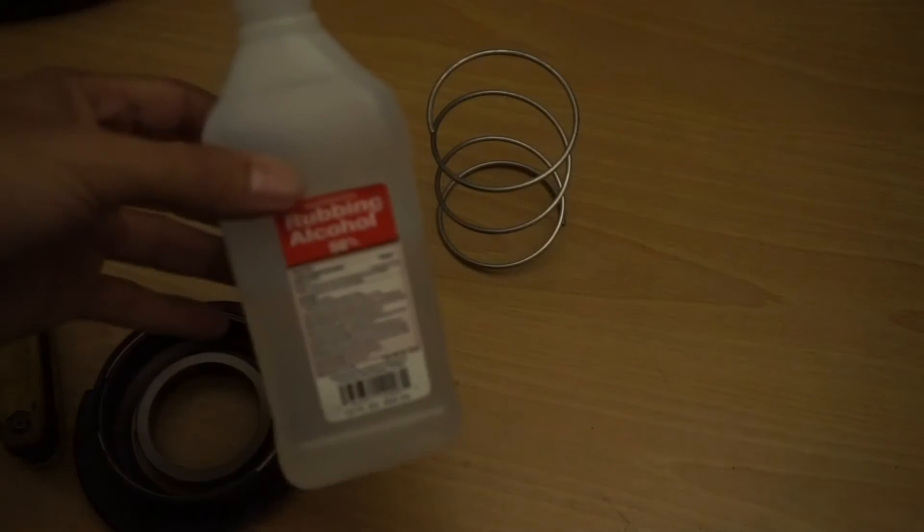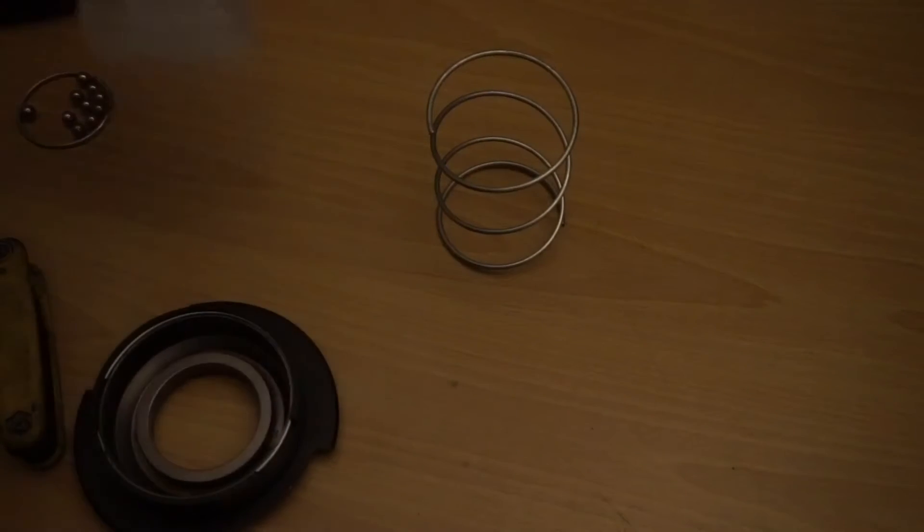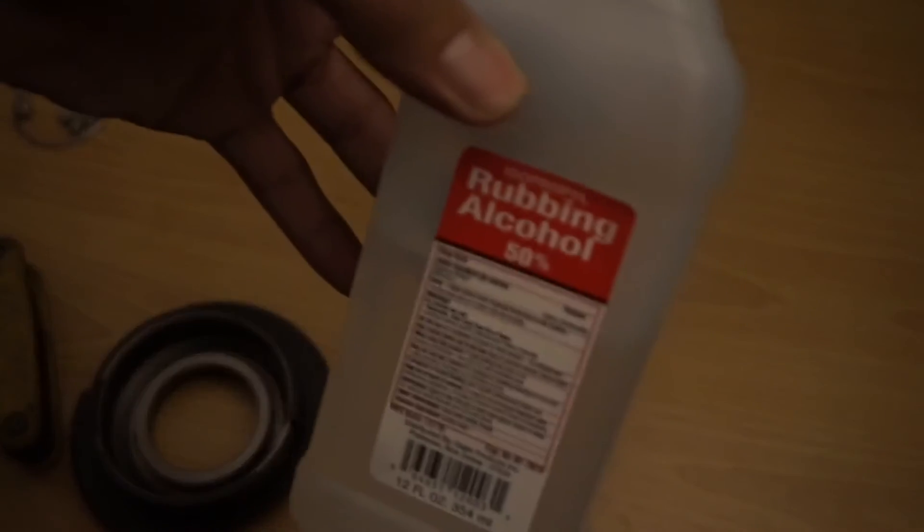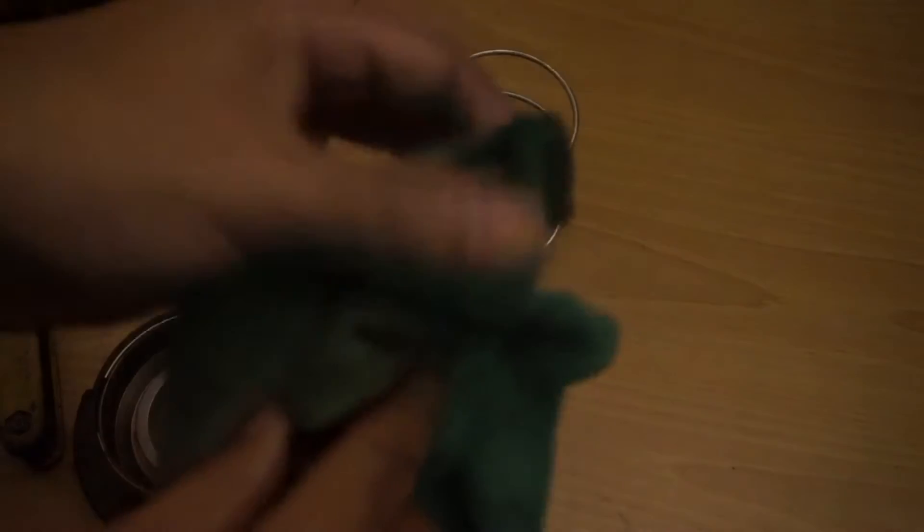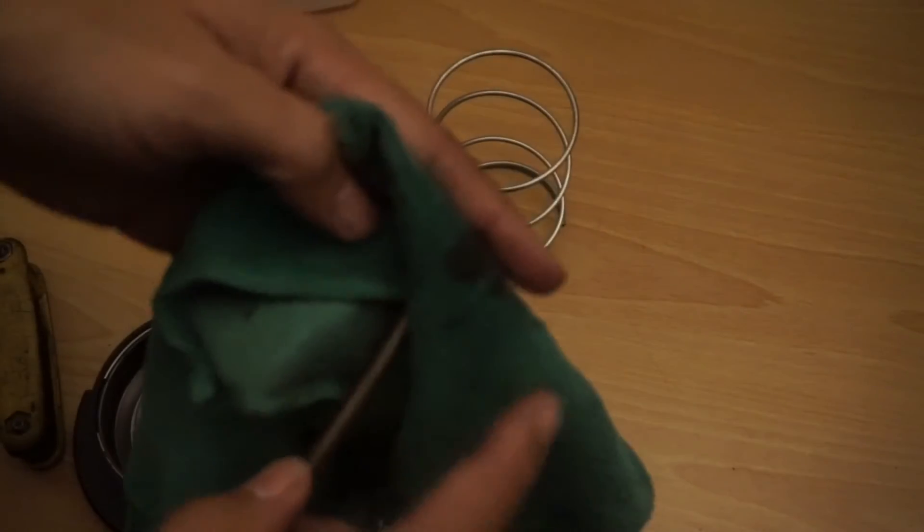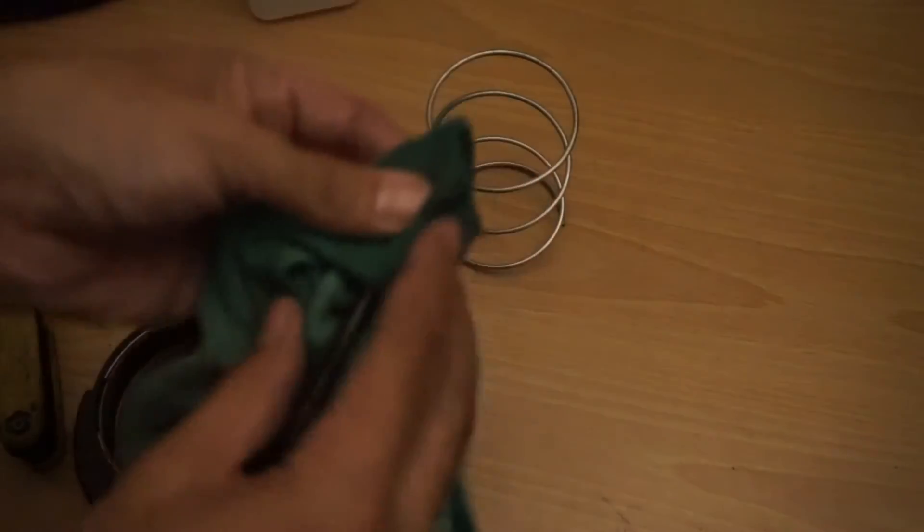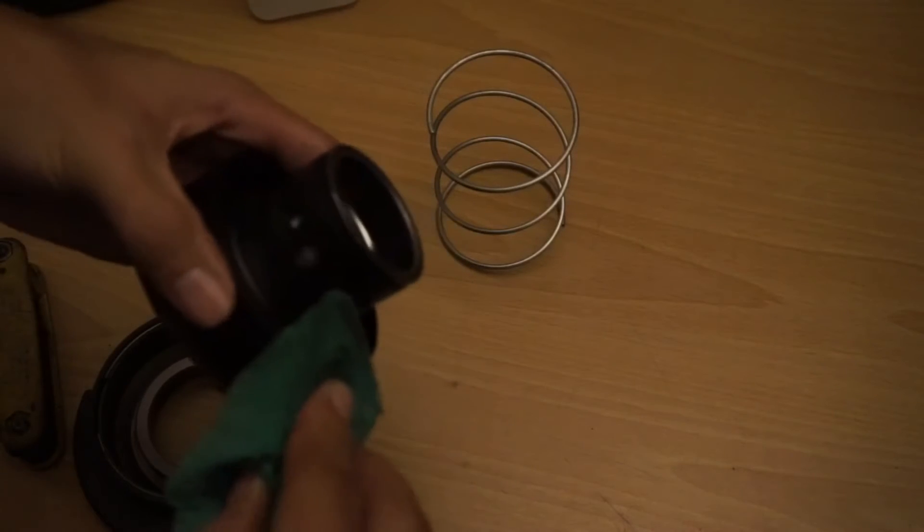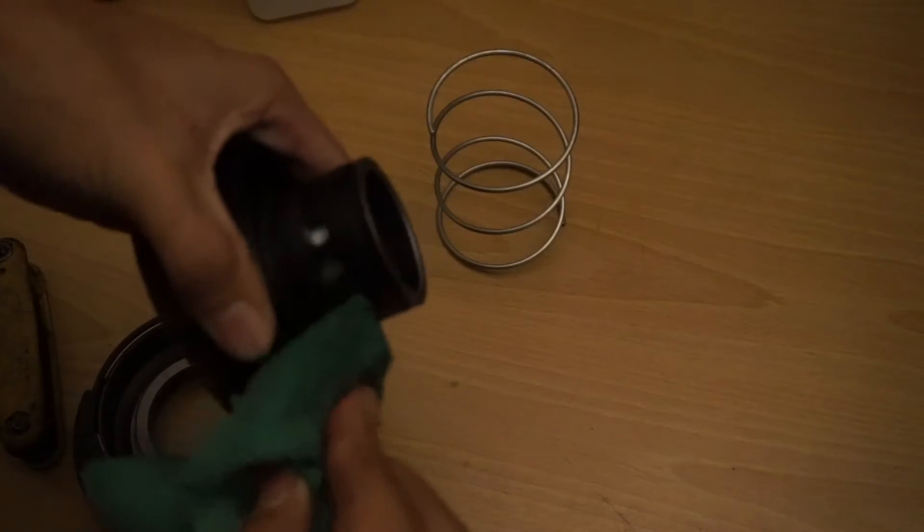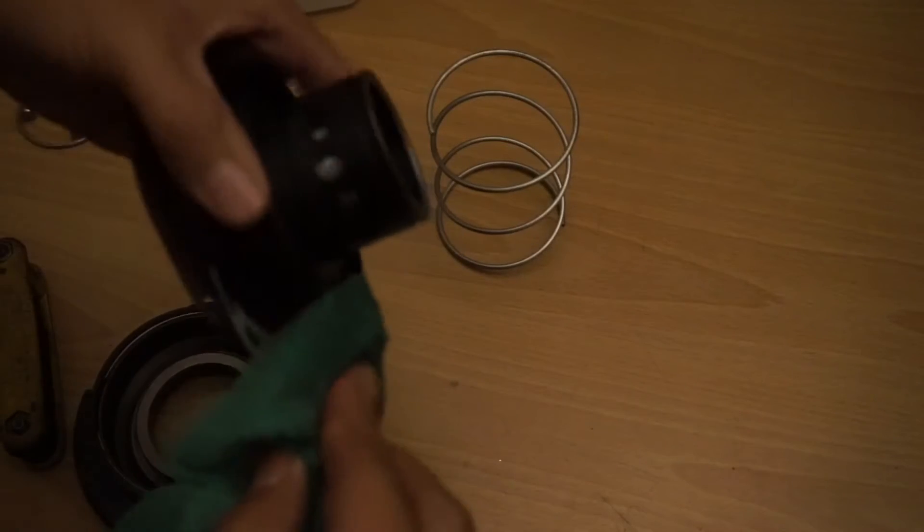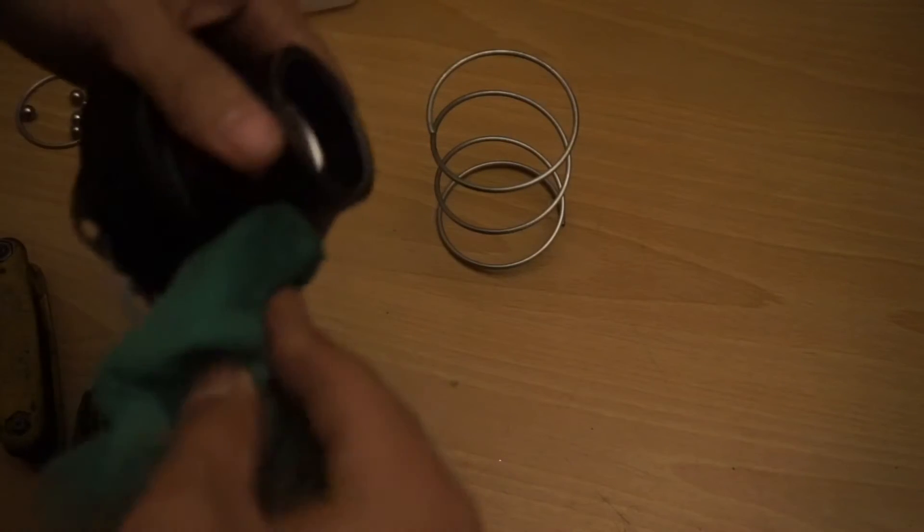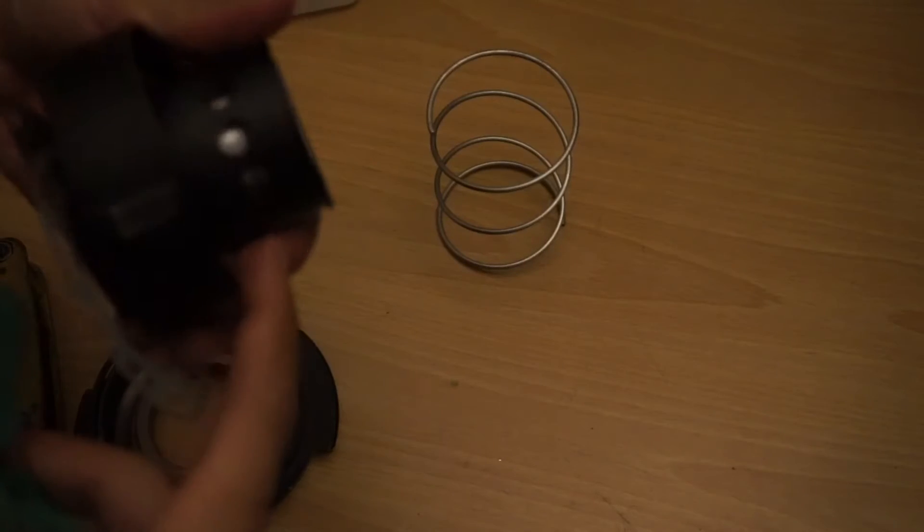All right so basically I'm using rubbing alcohol, this is 50% which is regular dollar store stuff. Another little tip is to get your rag, put it around a screwdriver, and get where the ball bearings seat in and just go around, because that's where most of the grime is going to collect. I already cleaned it as much as possible but you're going to find that a lot of grime is in there.